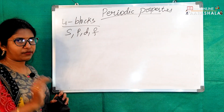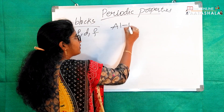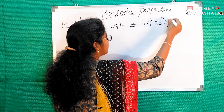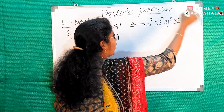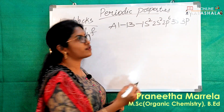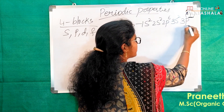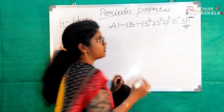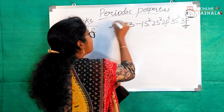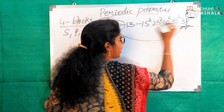For example, take the element Aluminium. Its atomic number is 13, and its electronic configuration is 1s2, 2s2, 2p6, 3s2, 3p1. The last electron is entering into the P orbital. This means the element belongs to the block into which the last electron is entering — so Aluminium belongs to the P block.